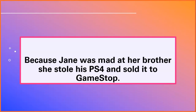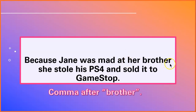'Because Jane was mad at her brother' is dependent. If I walk up to you and say, 'Because Jane was mad at her brother,' somebody's gonna ask me, 'Well, what did Jane do because she was mad at her brother?' 'She stole his PS4 and sold it to GameStop' is a complete thought — we have the person and what they did, so that's independent. If my dependent clause is leading the sentence — it's at the beginning — I need a comma at the end of the dependent clause. So I'm gonna need a comma after 'brother.'